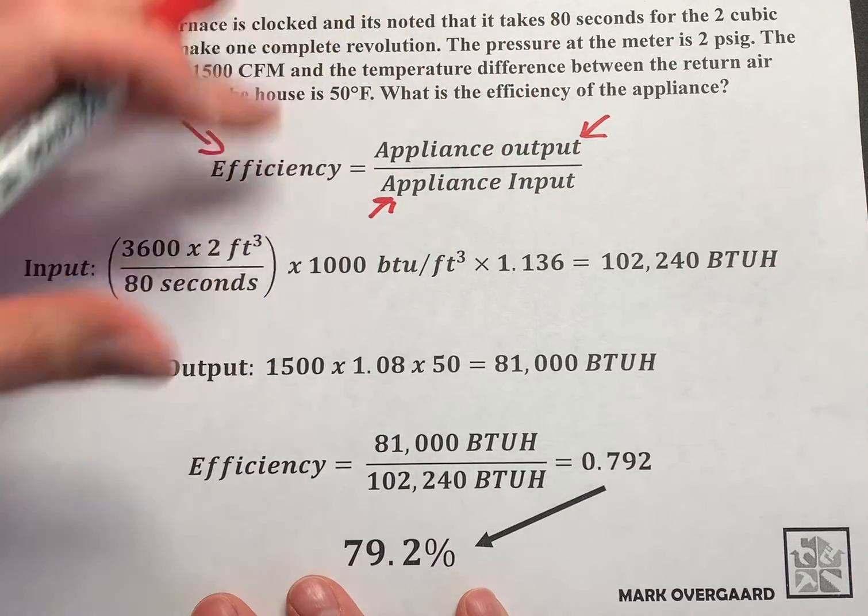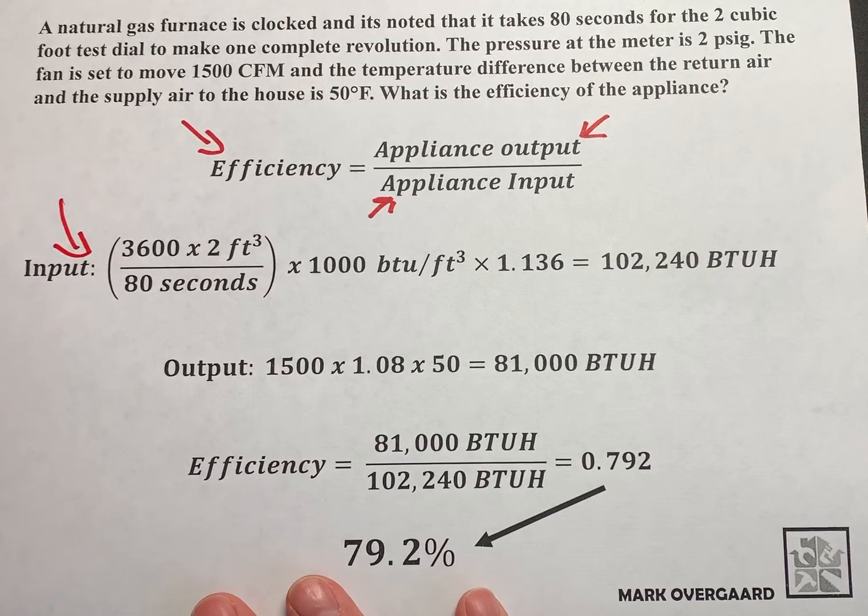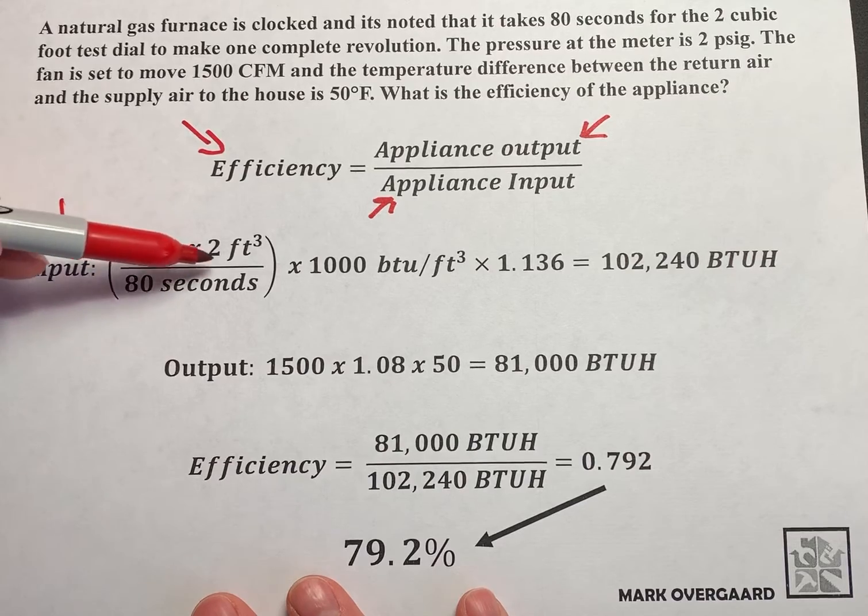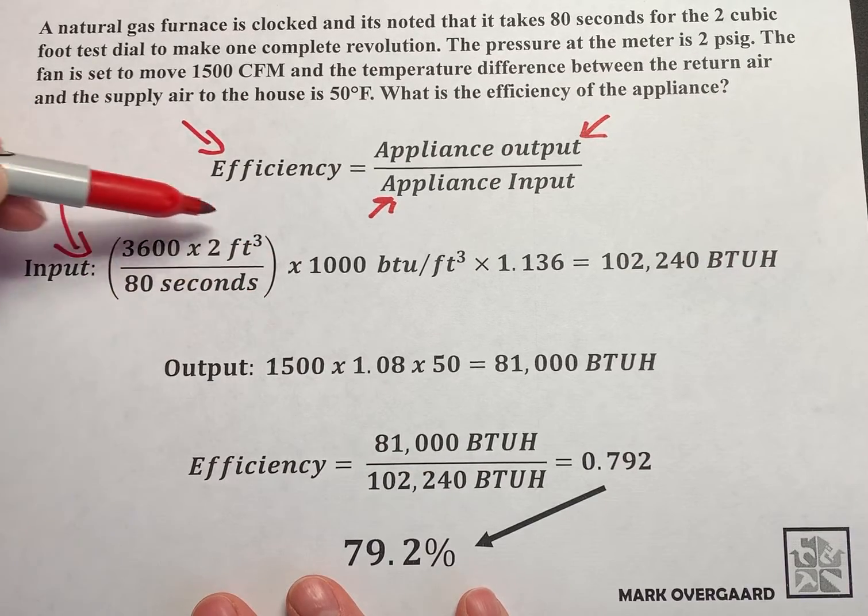So we've got that down. What we got to do is get to the formulas. There is your input formula. This is the clocking formula: 3,600 times 2 divided by 80. That's actually just the flow rate through your actual meter.